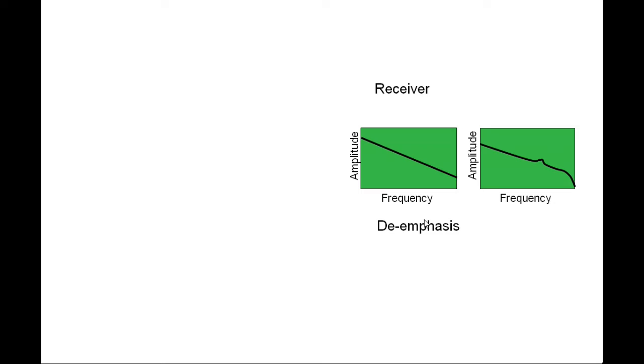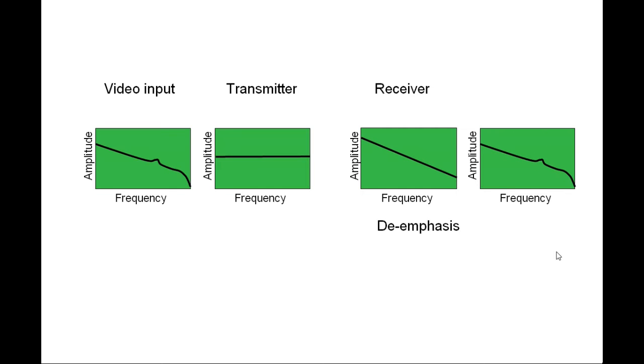So when we have the receiver, you would have a possible option. You have that you decrease the gain in the higher frequencies. Then you reduce the noise, of course. However, then you will not be able to have such a response that looks like the video input. It will look more like this, because you removed a lot of gain here. And we call this de-emphasis. So you remove the higher frequencies.